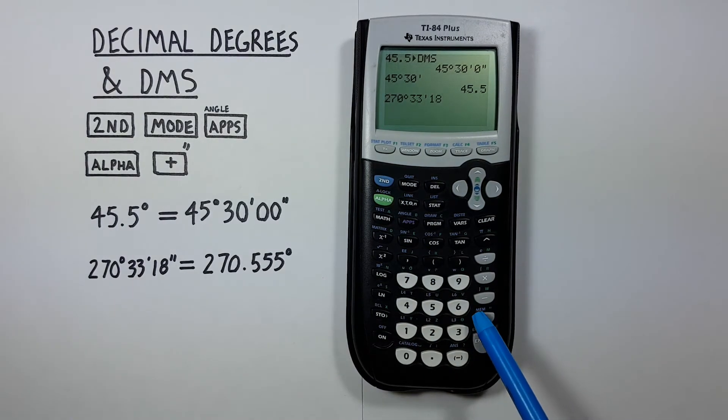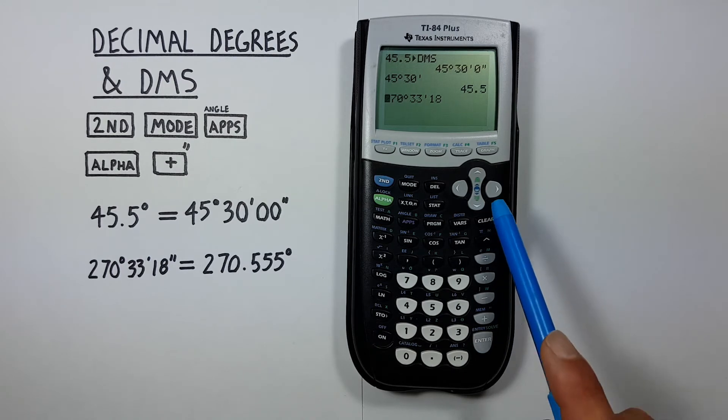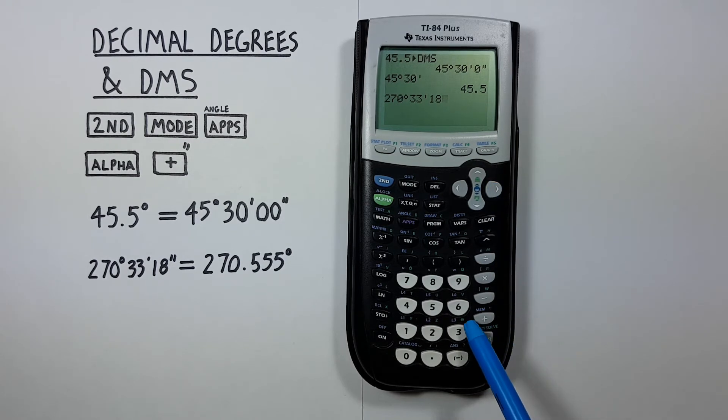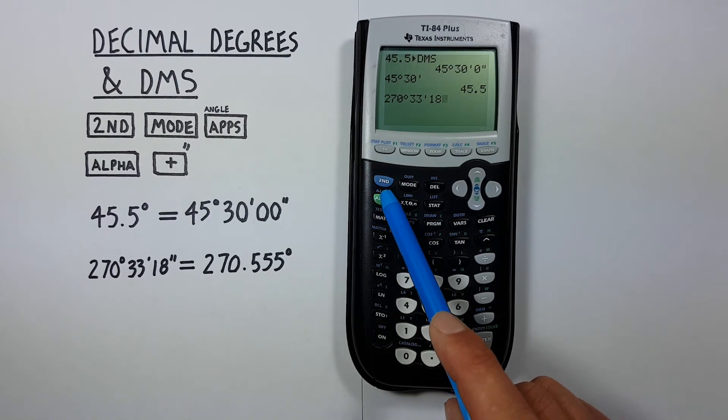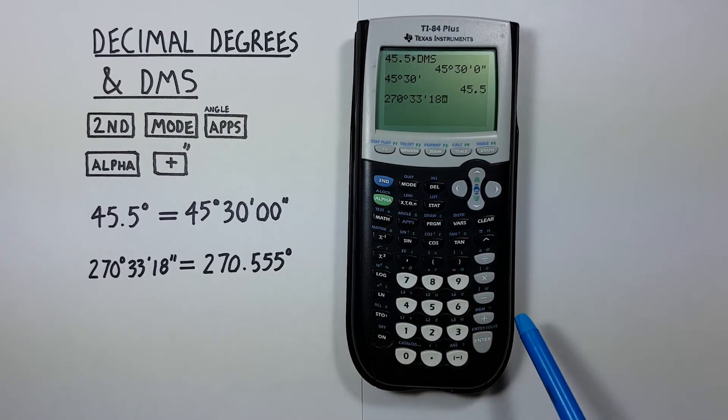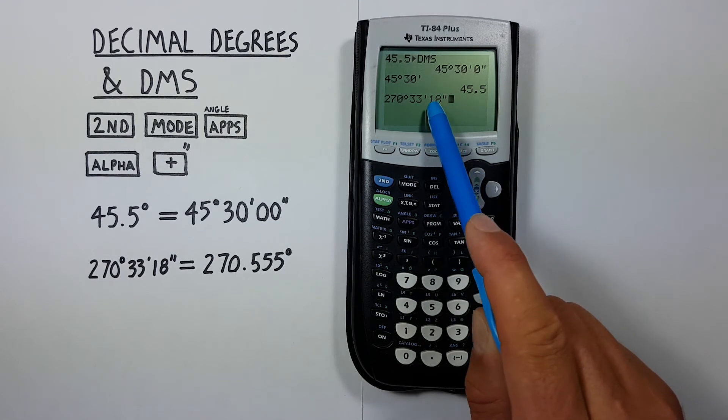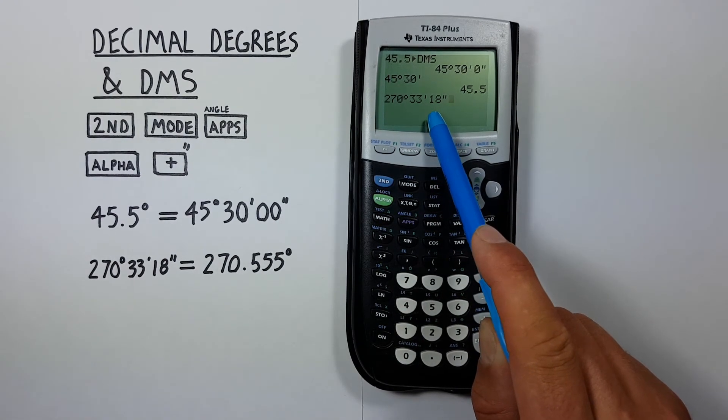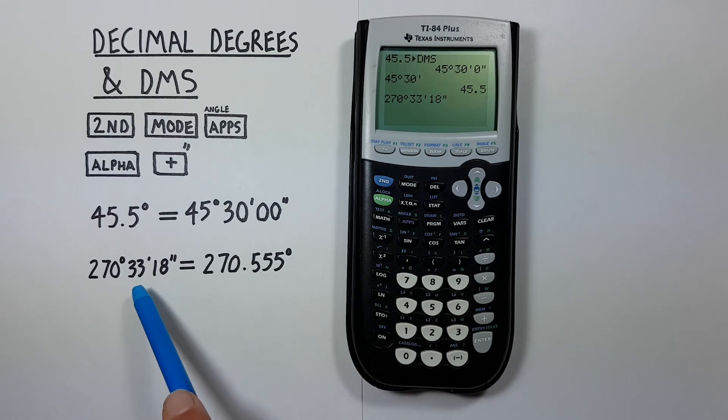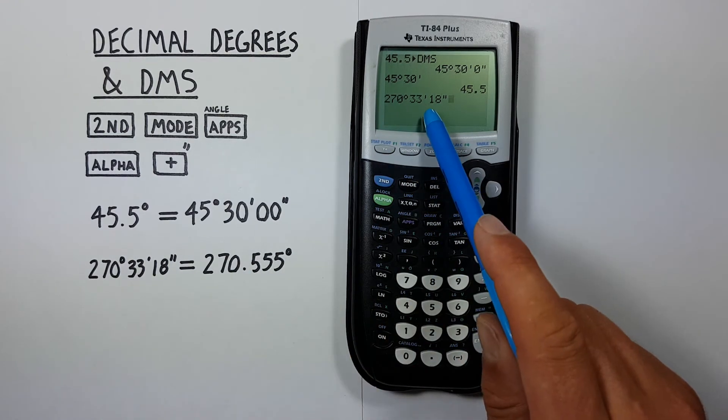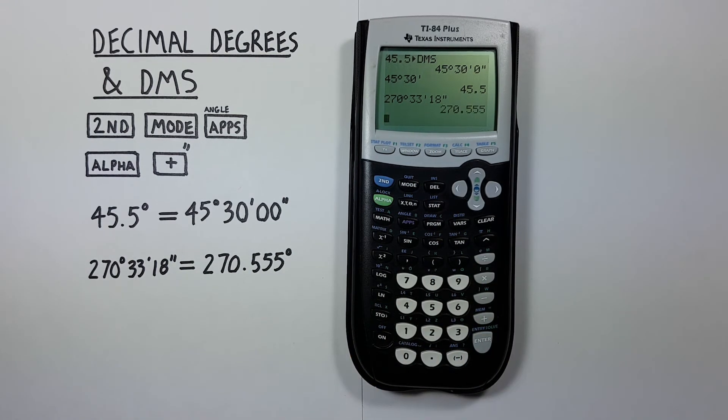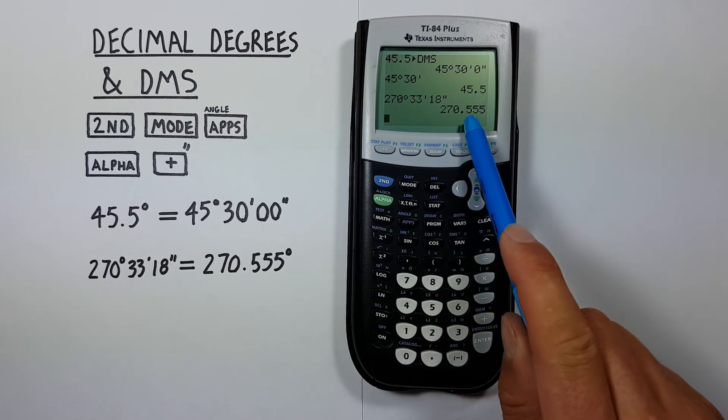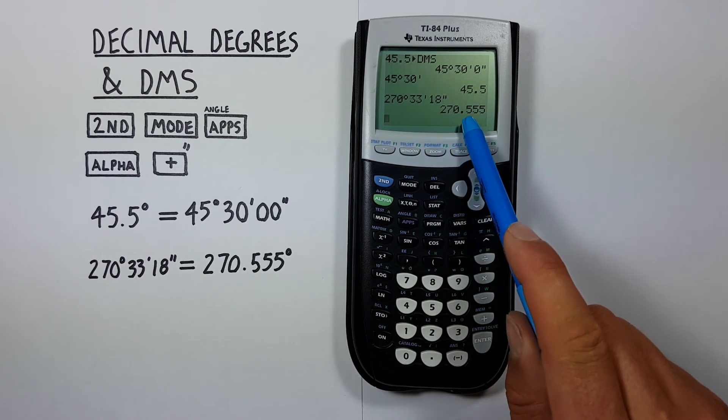If we look down here at the plus key, we see a second symbol in the top right in green. So if we scroll over to our seconds, and we want to change this to a second, well, you need to use the alpha key. So we press the alpha key here, and then the plus. And we see we now get seconds appearing on our screen. We have our 270 degrees, 33 minutes, 18 seconds. Press enter. And we see this converts to decimal degrees for us, which is 270.555.